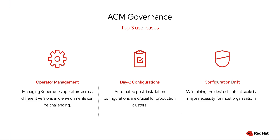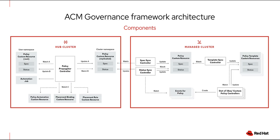Number three: configuration drift. Dealing with configurations manually is error-prone, especially in multi-cluster environments. ACM policies help ensure that settings remain as defined. The ACM governance framework is designed to automate policy enforcement and ensure consistency. This illustration shows how all the policy controllers that run in the clusters manage policy usage and placement across all managed clusters.